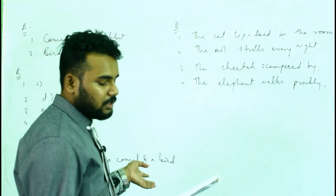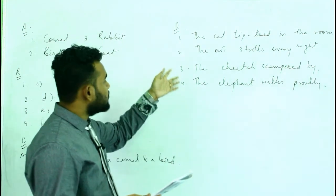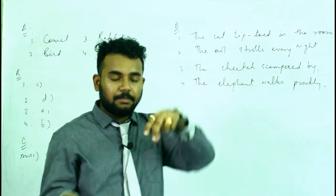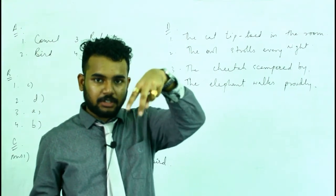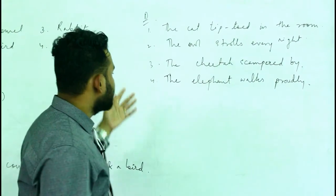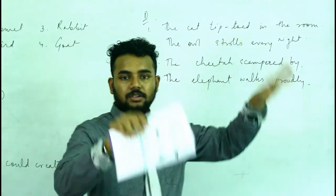Next we have come to D. Use this to make a sentence. The cat tiptoed in the room. Tiptoed means walk softly. The owl strolls every night. Strolls means walk around. The cheetah capered by. Capered means jumping.